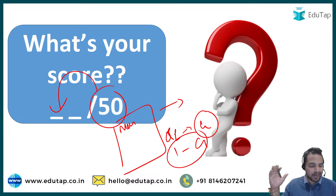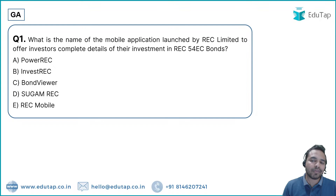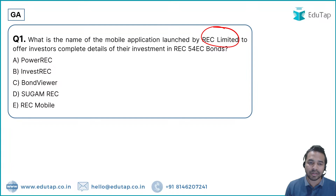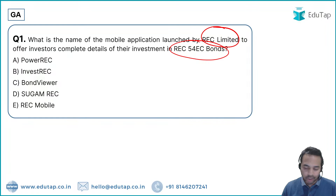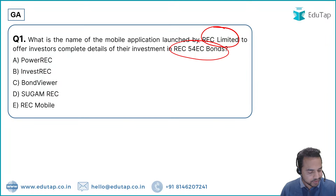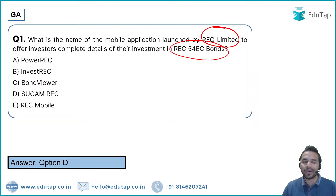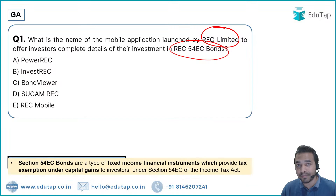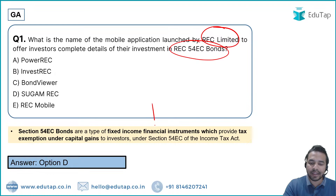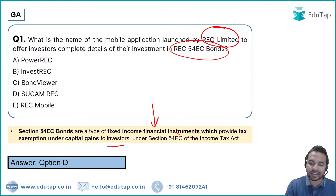Question 1: What is the name of the mobile application recently launched by REC Limited, under which it is offering investors complete details of their investment in REC 54EC bonds? The options are Power REC, Invest REC, Bonds Viewer, Sugam REC, or REC Mobile. The correct answer is Option D — Sugam REC. These REC 54EC bonds are fixed income financial instruments providing tax exemption on capital gains under Section 54EC of the Income Tax Act.